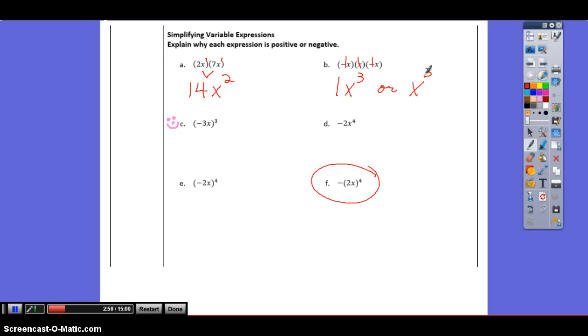How about this one? What did we get for this one? Since the negative's on the outside here, we get negative, which is like a negative 1, a negative assumed 1, times how many 2x's? To the 4th power, so it's 4 of them. What is 2 times 2? 4. Times 2? Times 2? And 16 times this negative 1 out here, the negative? And how many x's do we have? 4. Because there's 1, 2, 3, 4, 4th power.